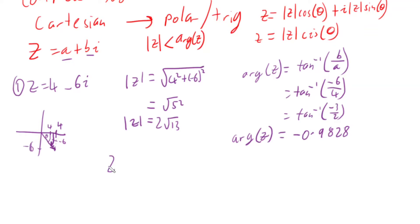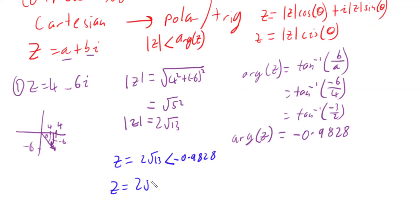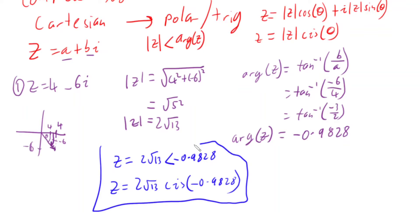So I can write my complex number in polar form as 2 root 13 angle negative 0.9828, or more commonly in trig form as 2 root 13 cis negative 0.9828. That's our final answer. Generally we write it in cis form, but sometimes you will see it in polar form.